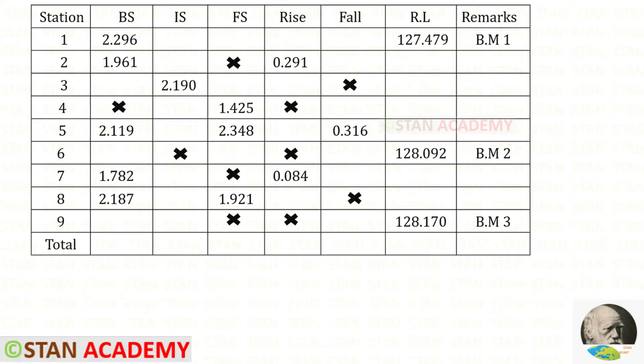As we can see here, the rise and fall method is used. From the previous problems we know that to get rise and fall, from the back sight to the fore sight we have to subtract all of the readings one by one. If we get a positive value that is rise, and if we get a negative value that is fall.